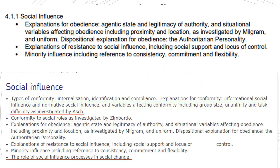Let's take a look at what we've got for the different topics. Starting with the paper 1 topics, what you can see at the top is the advanced information, and below that is the spec. The advanced information just has three out of the six bullet points for social. What's not included is what I've underlined: types and explanations of conformity — not included, Asch — not included.